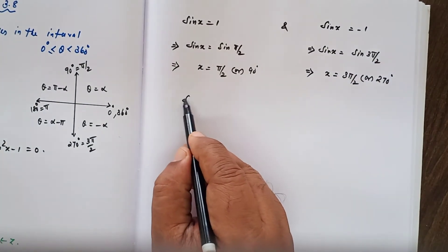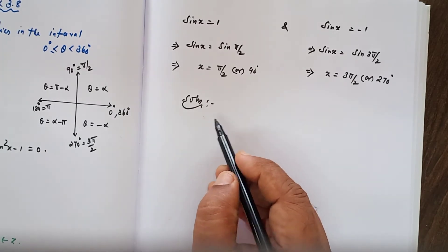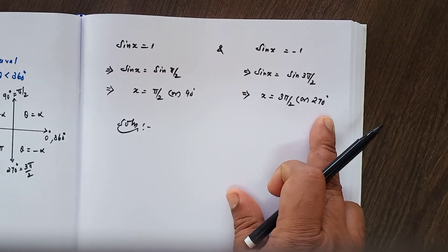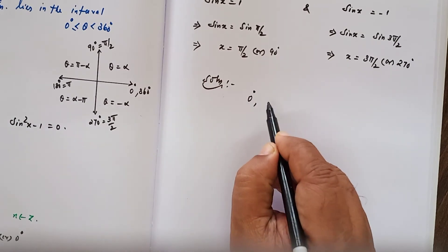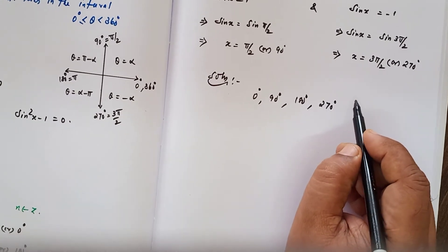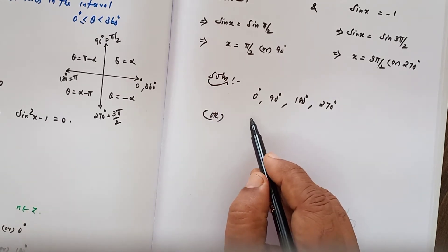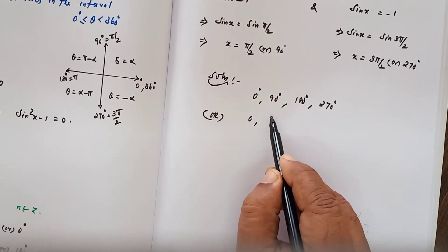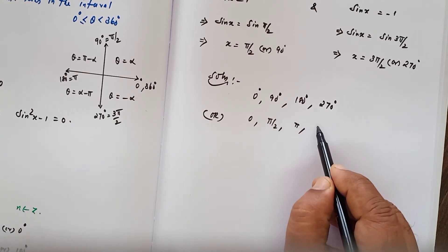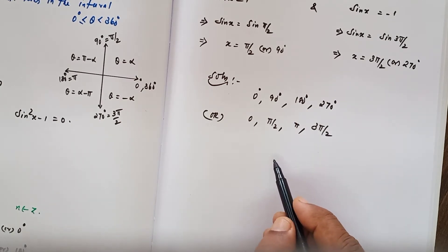Finally, write the solutions in order. From case 1 we have 0° and 180°; from case 2 we have 90° and 270°. So in order: 0°, 90°, 180°, 270°. Or in radians: 0, π/2, π, 3π/2. That is the solution. Subdivision 1 is over; now subdivision number 2.